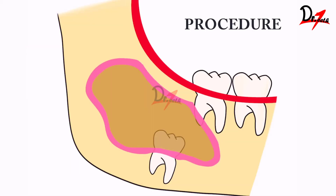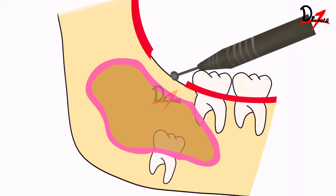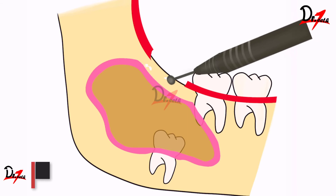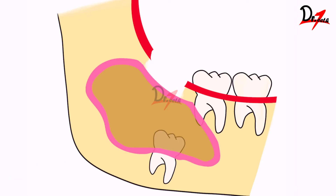Now let us see the procedure. We will start by elevating the flap. We can give a circular elliptical incision or an H-shaped incision. After this, we can use a rotary bur or rongeurs depending on the bone thickness, and then we will remove the bone to reach the cyst. We have to keep in mind that we need to remove the bone to the maximum diameter of the cyst if possible. This small area of the cyst lining will be sent for biopsy so that we can check if the cyst has any dysplastic potential.